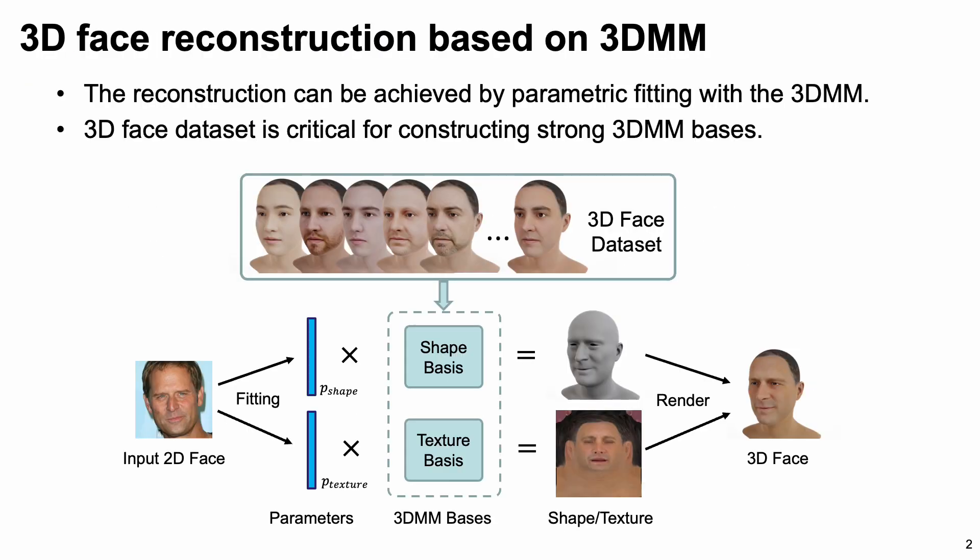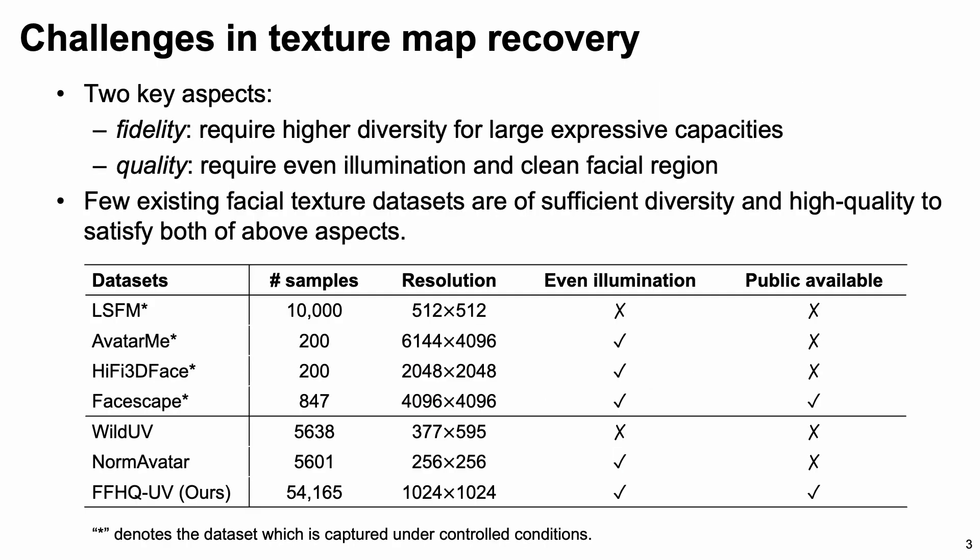3D face reconstruction can be effectively achieved by parametric fitting with a 3D morphable model. In this process, the 3D face dataset used to construct the 3DMM bases is crucial. For texture map recovery, there are two key aspects that deserve attention: fidelity and quality. To recover a high-fidelity texture map, the facial texture dataset needs to have higher diversity so that the texture bases can have larger expressive capacities. Recovering a high-quality texture map requires the textures in the dataset to be evenly illuminated and without undesired hairs or accessories. However, few existing facial texture datasets can satisfy both of these aspects.